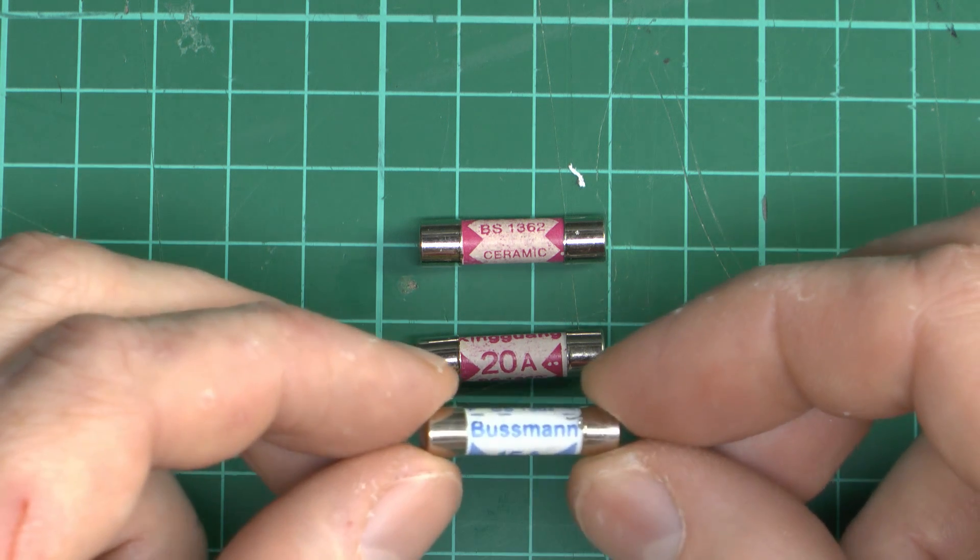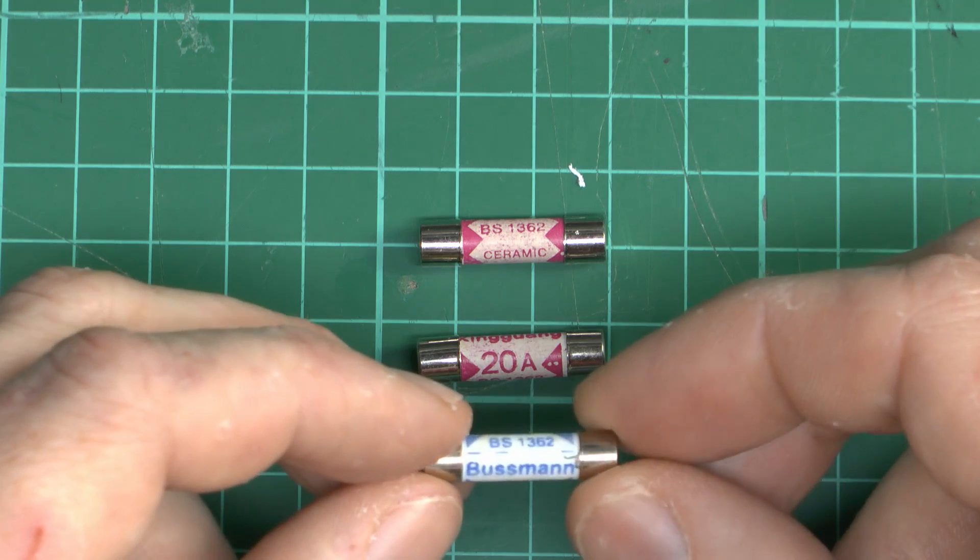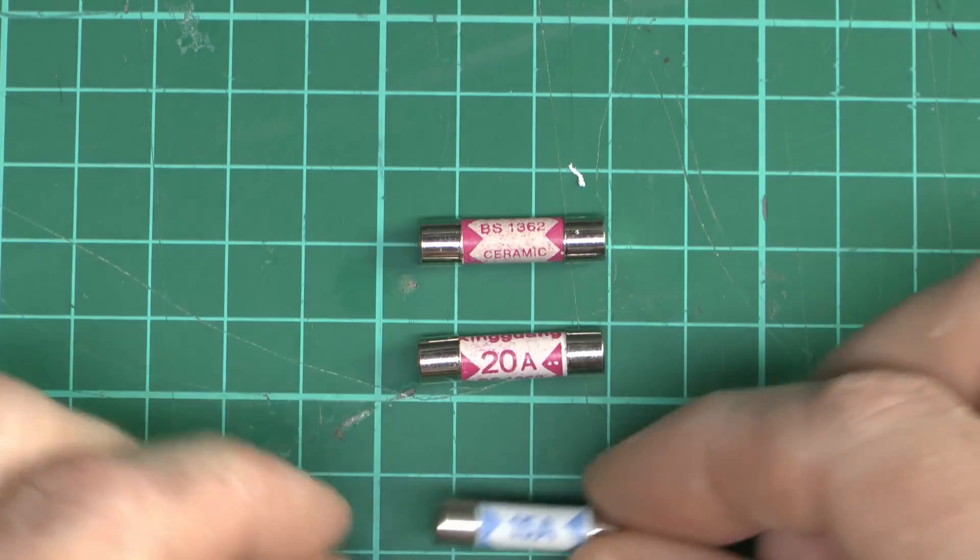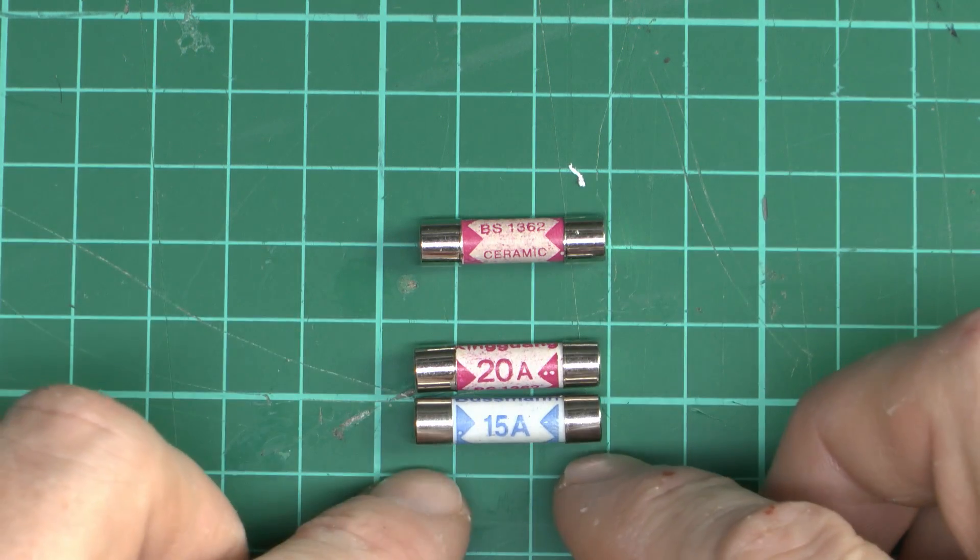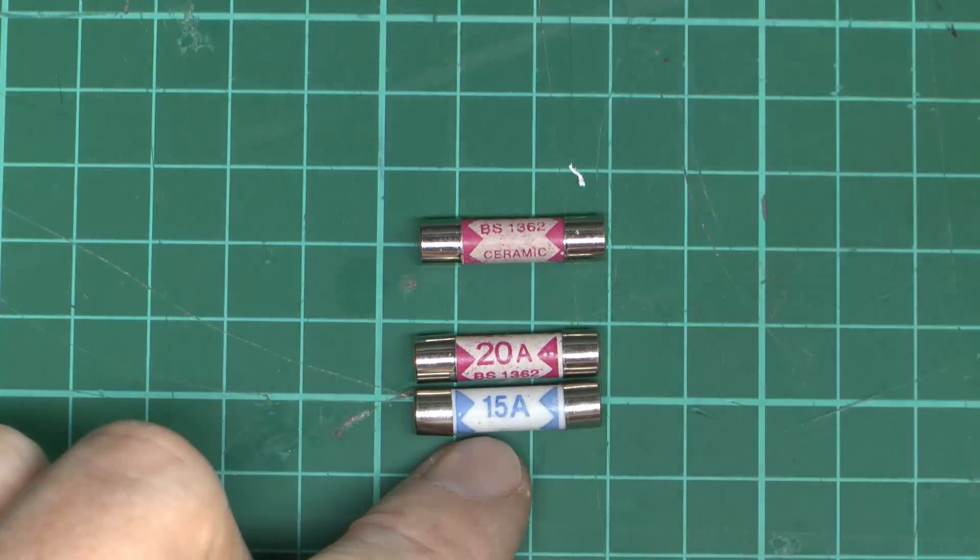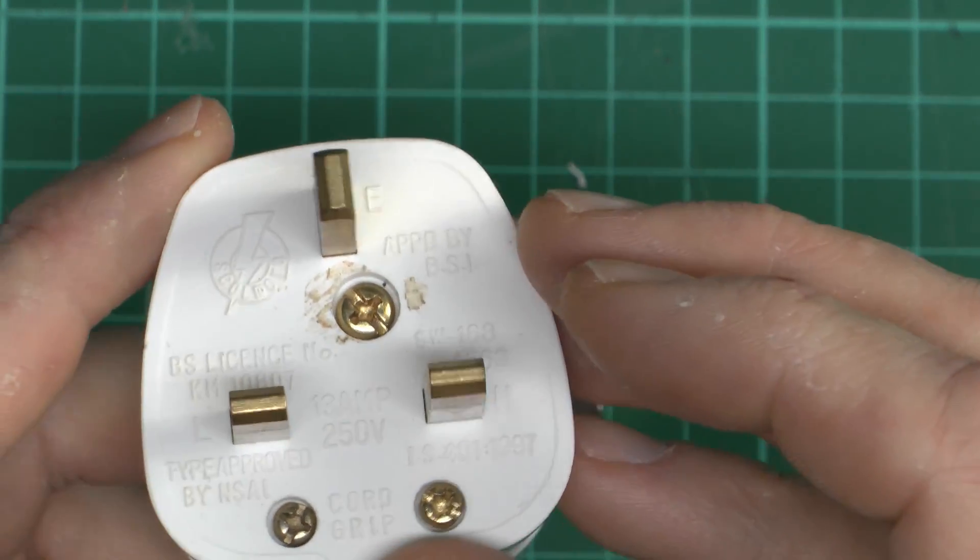Now what we've seen before in the past, other fakes along the same line. This is a 15 amp one, claims to be made by Busman, but of course it isn't. Busman do not make 15 amp fuses in this style, and of course nobody else should either. So it's along the same kind of thing. Quite why they're being made isn't particularly clear, because the only things these fit into are the standard UK plug, the BS1363.